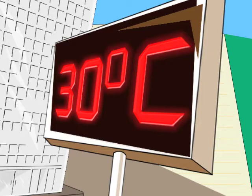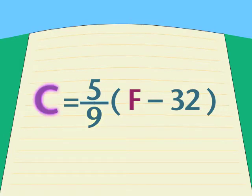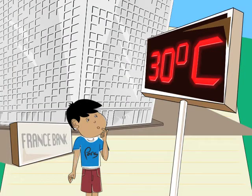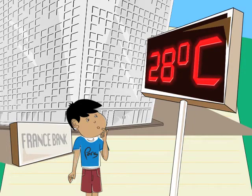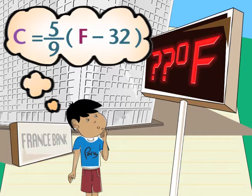That was easy. You know why? Because we used a formula for C, a formula where C was already isolated by itself on one side of the equation. But suppose you visit France, and the bank there tells you the temperature in degrees Celsius, and the temperature is dropped to 28 degrees. Can you use the same formula to find the value of F to convert Celsius to Fahrenheit?